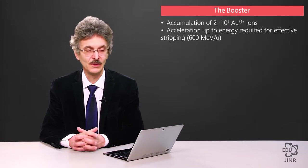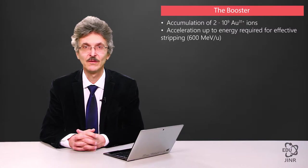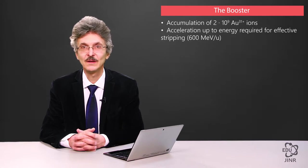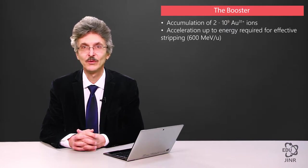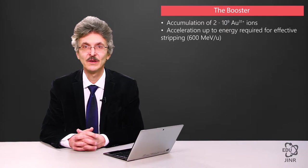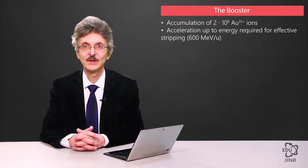What is magnetic rigidity? It allows gold ion acceleration in a charged state of 31 up to 600 megaelectron volts per nucleon. This energy is enough to generate fully stripped gold ions after passing through the target. After passing through the target, approximately 80% of the original beam will have a charged state of plus 79. The remaining non-stripped and partially stripped ions will be separated and absorbed in a special beam dump.